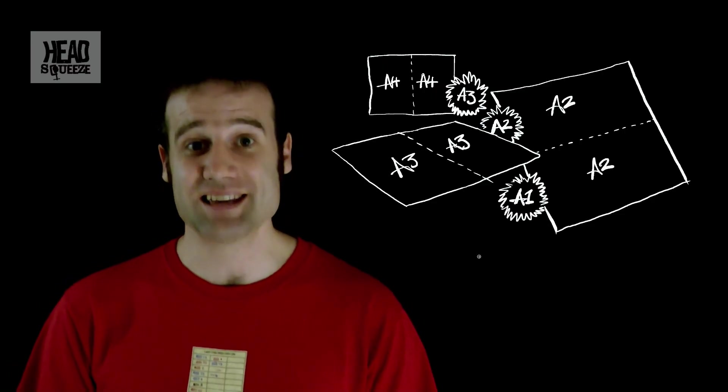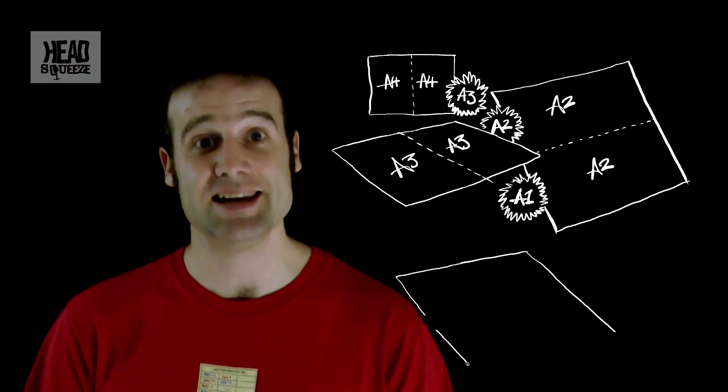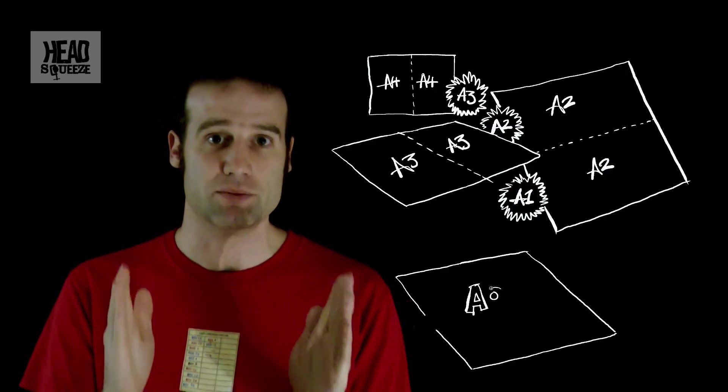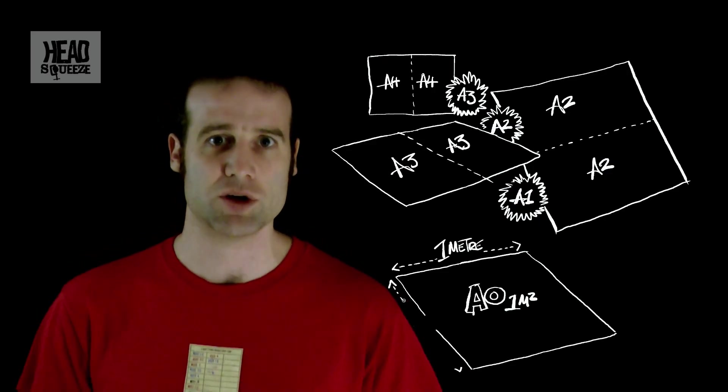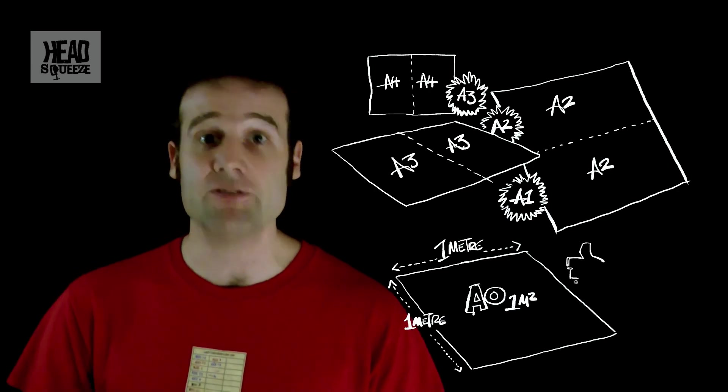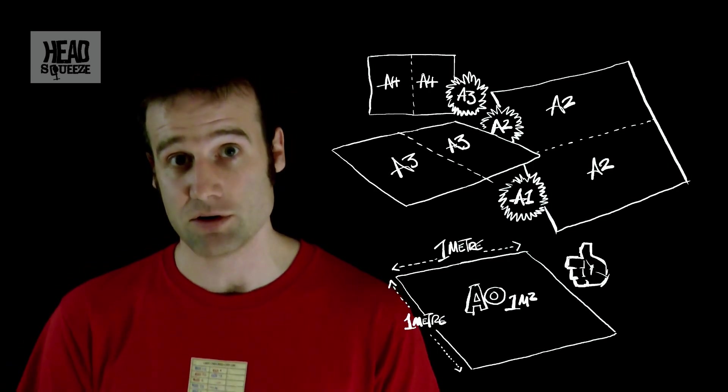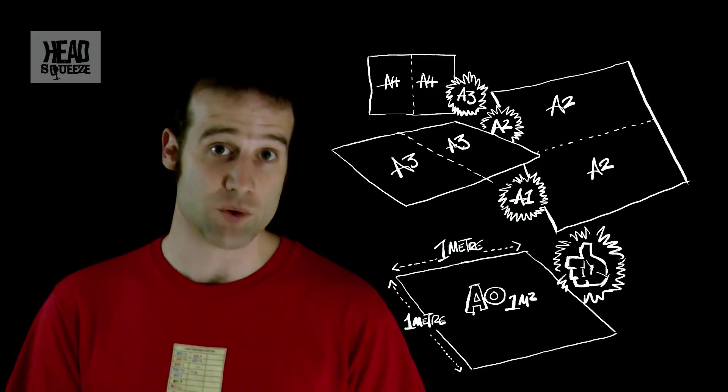An A0 is exactly one metre squared in area. It's a very nice, very precise area. And then you start halving it to work your way down the scale. So you cut it in half, A1s have half a square metre of area, A2s have a quarter of a square metre of area, A3s have an eighth of a square metre of area, and A4s have a sixteenth of a square metre of area. It's one to the two to the power of whatever the A is. It's brilliant.